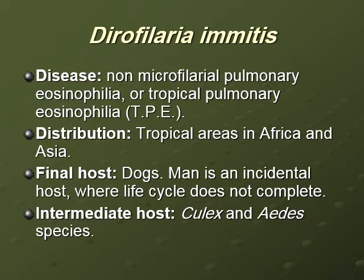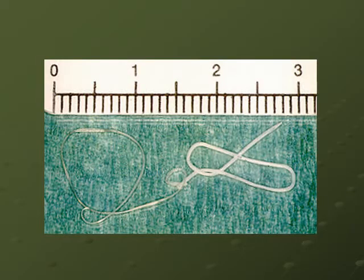The final host is the dog. Man is an incidental host for Dirofilaria immitis, where the life cycle doesn't complete as it does in the dog, but the juveniles remain in the tissues of human beings. The intermediate host is Culex and Aedes species of mosquito. This is the shape of Dirofilaria - the male and female. Here the female is thicker and more whitish in color than the male. It is about six to seven centimeters in length.